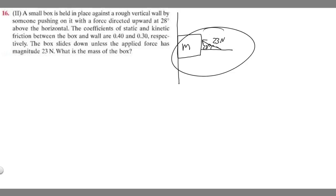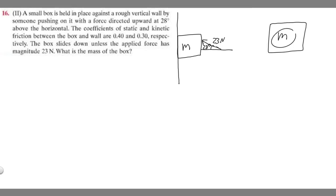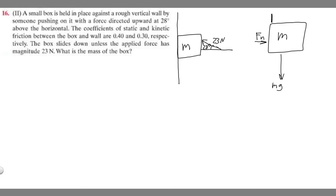Now let's create a free body diagram of everything acting on the box — this is the most critical step when solving these problems. Any object that has mass is going to have mg going downwards, the weight force. Since we have a wall, it's going to push back with a normal force. We also have a force of friction pushing up against the box, stopping it from sliding down the wall. We also need to find the vertical and horizontal components of the applied force rather than keeping it at an angle.